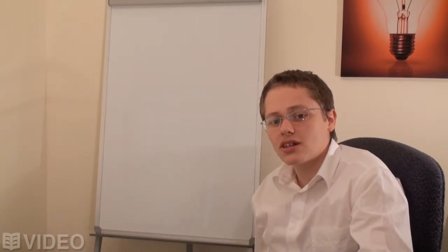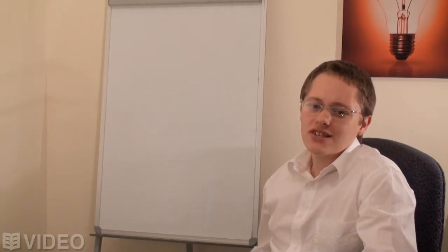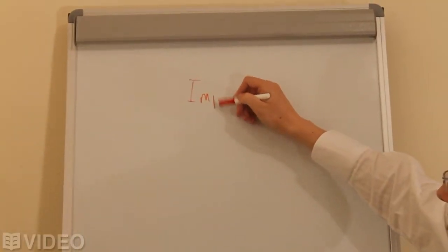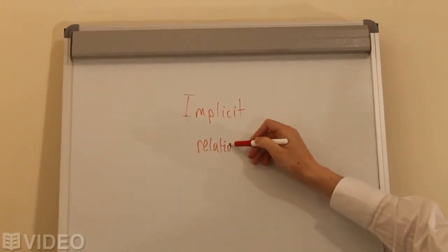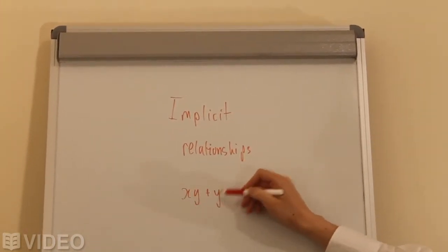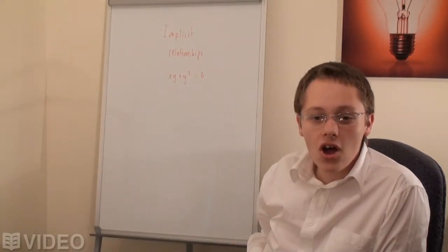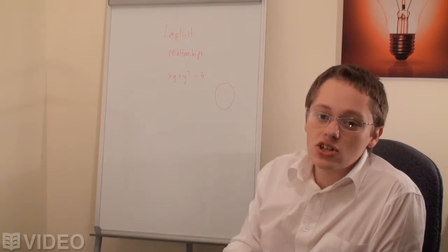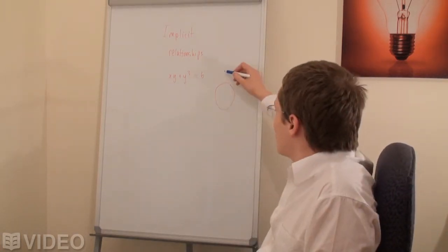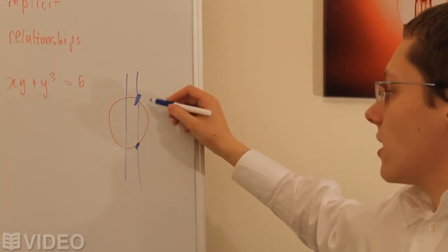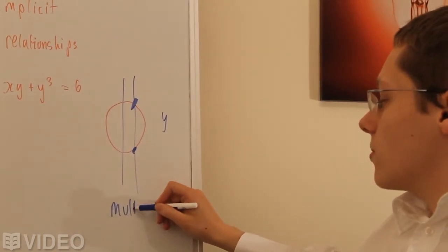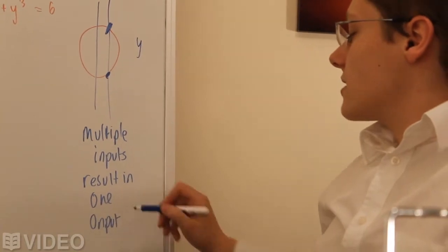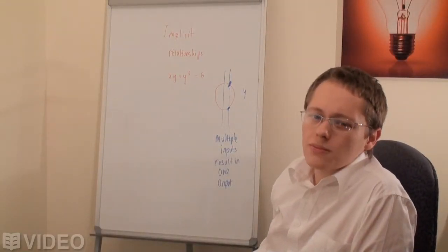Implicit differentiation is very similar to the differentiation rules we already know — it's just a matter of having that extra y variable in there. In case you don't know what implicit means, it just means that we're looking at relationships. It means that x's and y's can exist on the same side of the equation. A circle is an example of an implicit relationship, where we can have multiple x values for one y value — multiple inputs resulting in one output. And that's why we have implicit differentiation: it's important because not everything is a function.